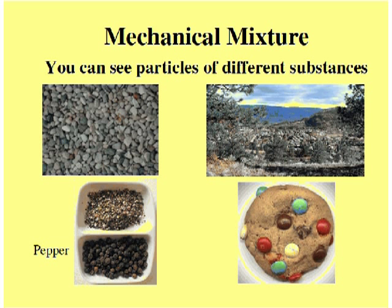A mechanical mixture is a combination of two or more substances that, no matter how hard you stir or mix, they still remain as separate substances lying beside each other. The materials that are mixed together aren't made into one.